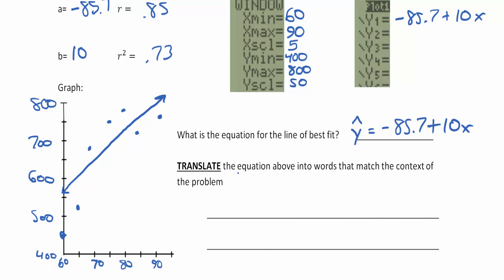Now we're going to translate the equation above into words and match the context of the problem. This goes back to our translation problem. So we start at the y-intercept here, negative 85.7, and this in terms of units is in the y unit. So starting with negative 85.7 visitors.